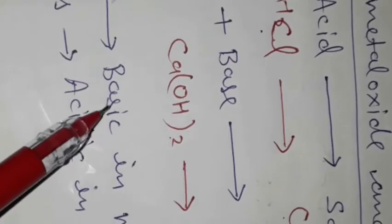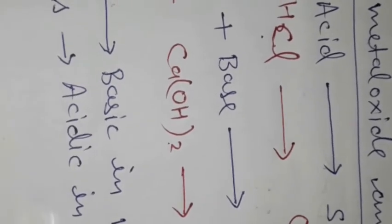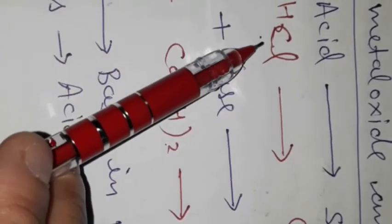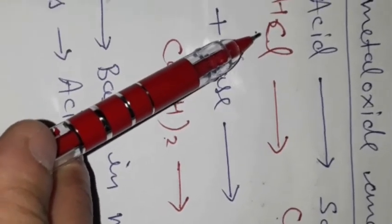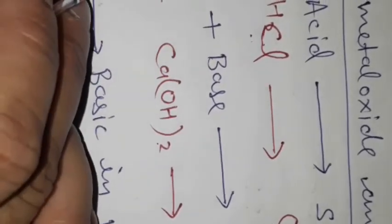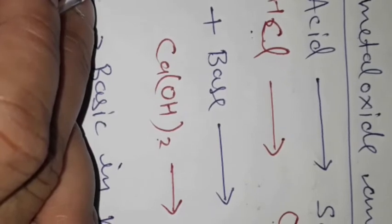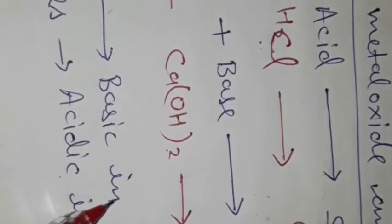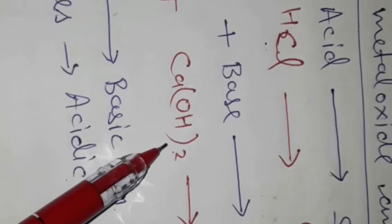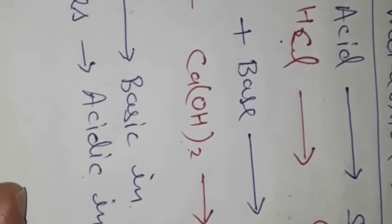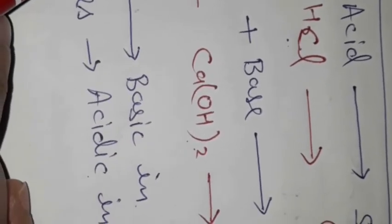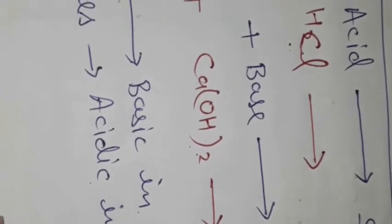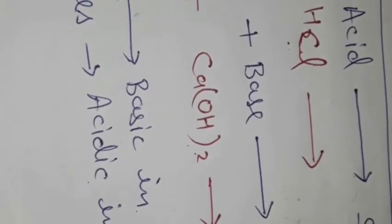Metal oxides are basic in nature and non-metal oxides are acidic in nature. HCl is an acid and it reacts with a base, so metal oxide is basic in nature. Ca(OH)₂ is a base reacting with CO₂, a non-metal oxide, which is working like an acid. So non-metal oxides are acidic in nature.